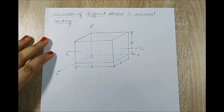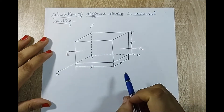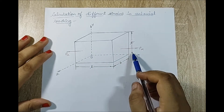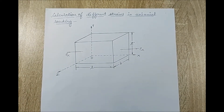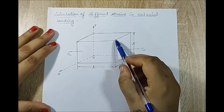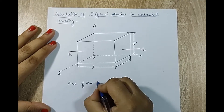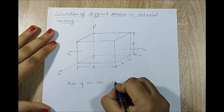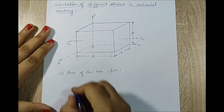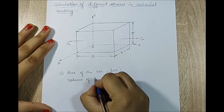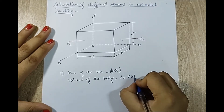Now we will start with the derivation and calculation of different strains in uniaxial loading. I have taken a rectangle where length is L, width is B and thickness is T, with a load Px applied along the x-axis. The area of the bar on which the load is applied will be B into T — that is the cross-sectional area on which load Px acts.